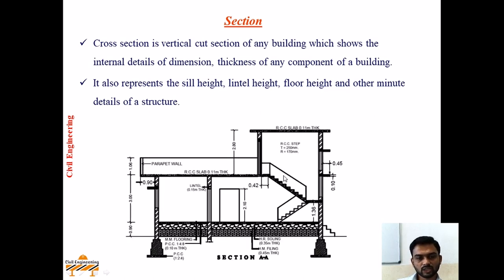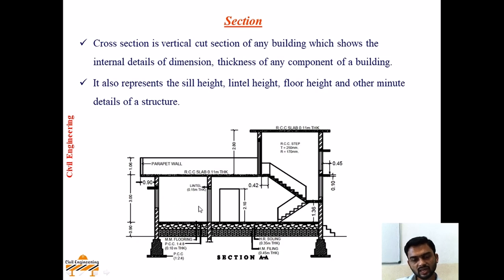Here we can see what actually a section is. Section may be of a load bearing structure or RCC structure. In this load bearing structure example you can see all the sectional details - how the flint filling is done, wall thickness whether external or internal, thickness of the slab, parapet height, beams if provided, depth of the beam, thickness of the RCC overhead slab, height of the landing, and height of each flight. All these details are visible in this sectional elevation.